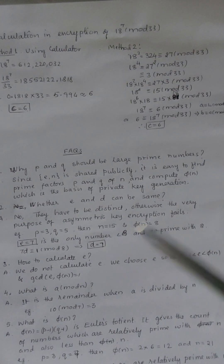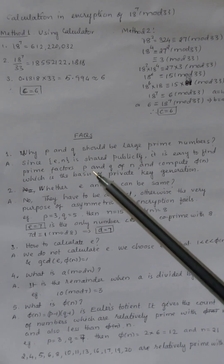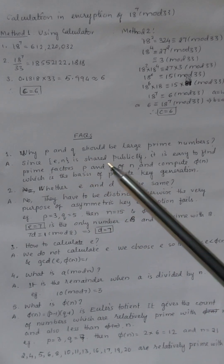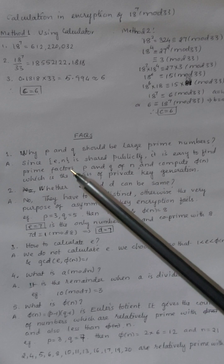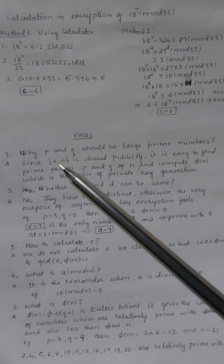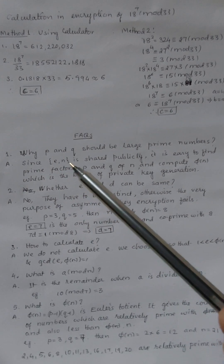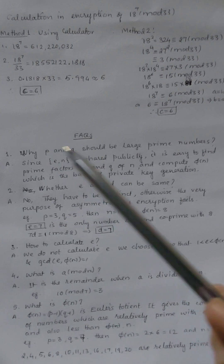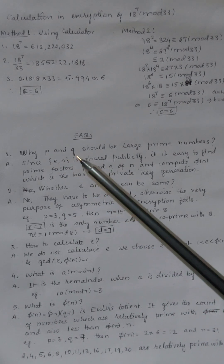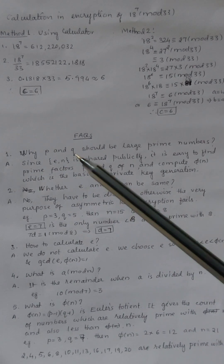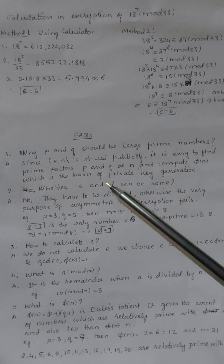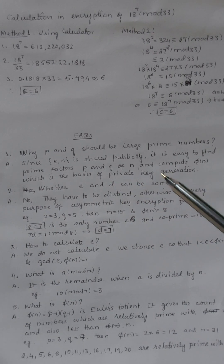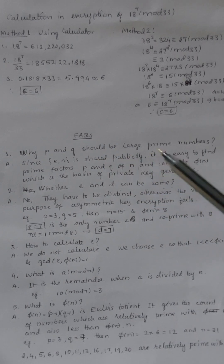A commonly asked question is: why should we choose p and q as very large prime numbers? The reason is that the receiver shares the public key and N. If N is small — being the product of p and q — anyone can find its factors p and q, then easily calculate phi(n), which is the basis for key generation, and thus determine the private key. For security, p and q must be very large prime numbers.